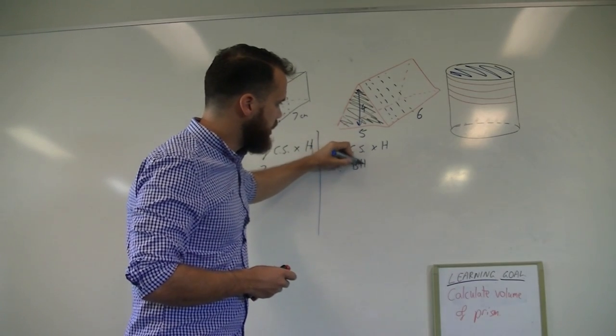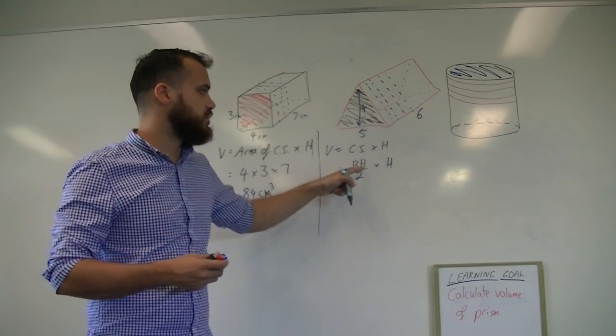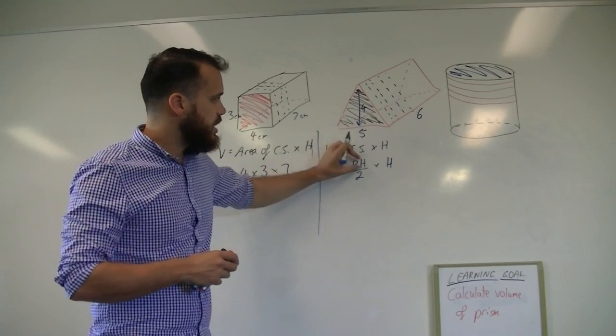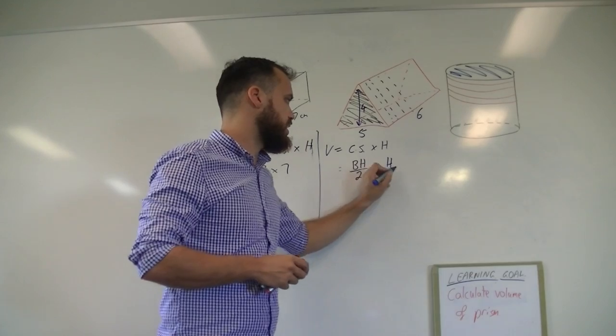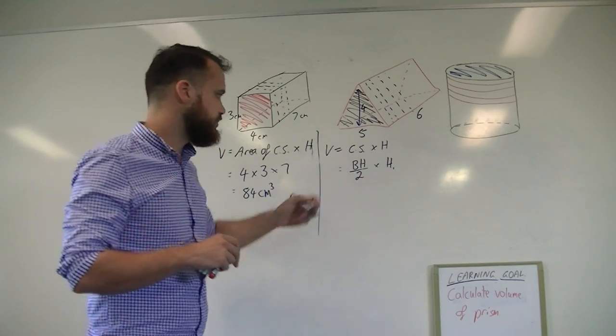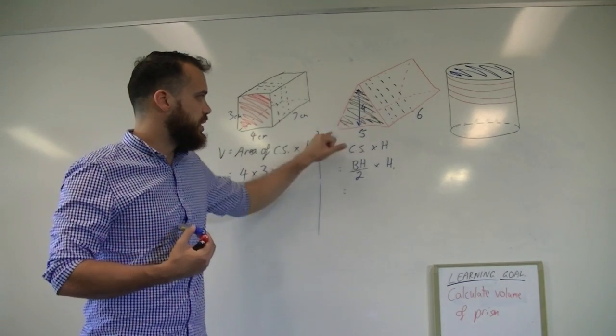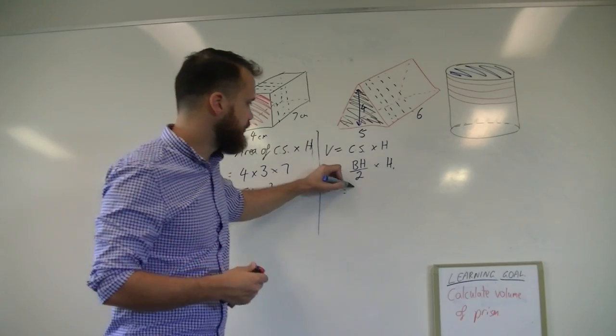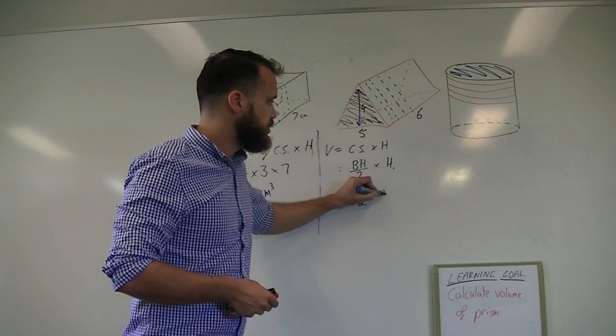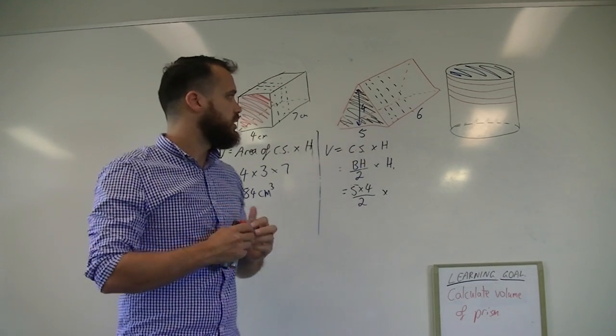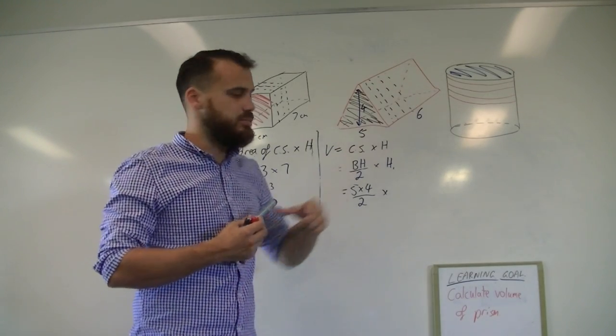So I'll just write that in. Base times height divided by two times height. This is a bit confusing here because I've got two h's that mean different things. This h means the height of a triangle, and this h means that. I'm just going to call one h and one h1, just so they don't get too confused here. So, area of the triangle first. Base times height divided by two. So five times four divided by two times that height. That height is six. That's the distance you need to move your knife along. Times six.